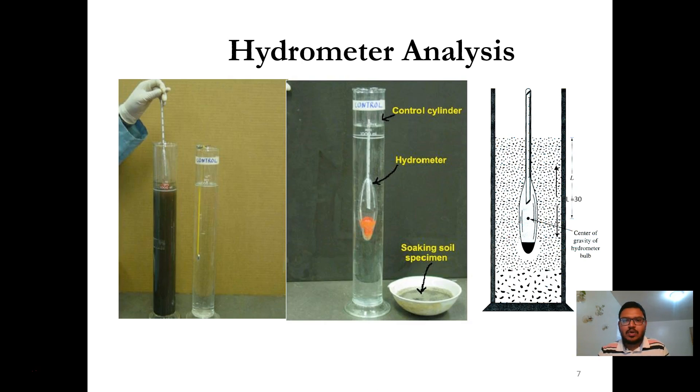In hydrometer analysis, we will use two cylinders. One is the sedimentation cylinder and the other is the control cylinder. In the sedimentation cylinder, there will be soil slurry in which we will do the experiment. And in the control cylinder, there will be a control solution.